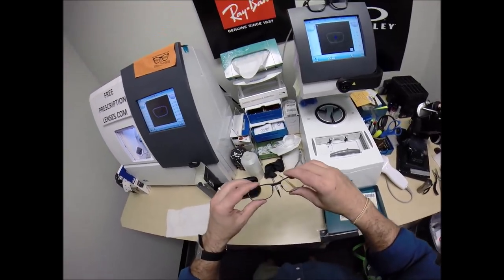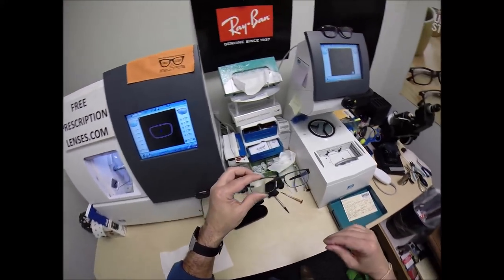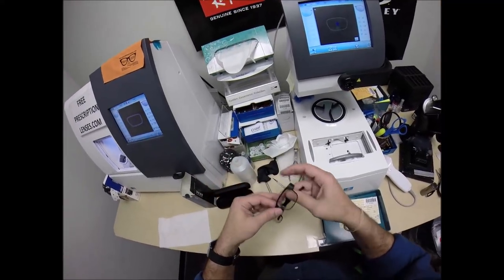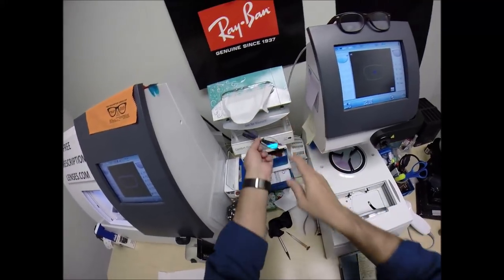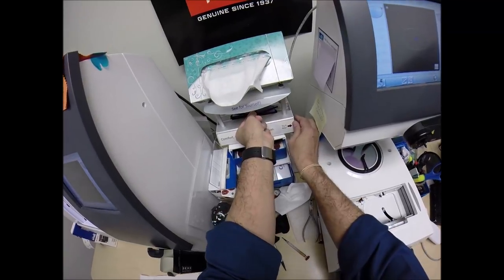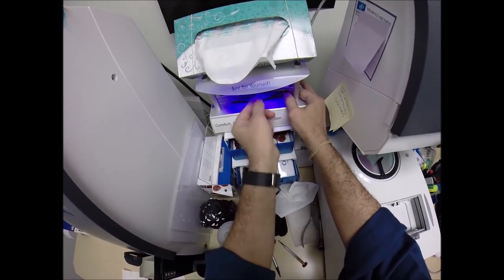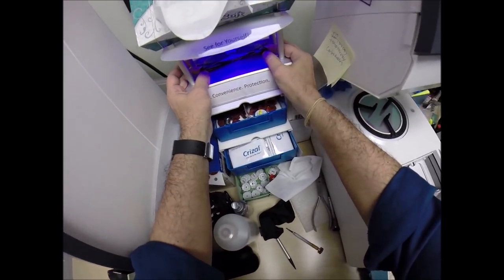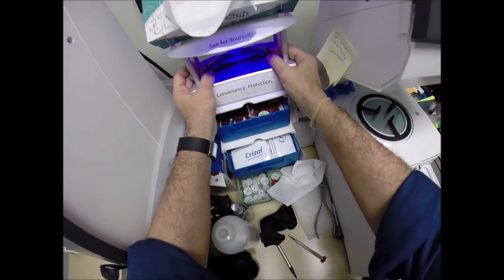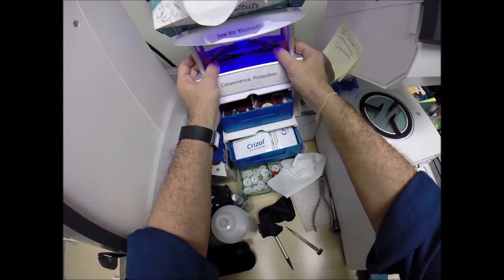So again, this is what your lenses look like clear. I'm going to go ahead and expose them to a strong burst of ultraviolet light in my little transitions box. As you can see, it takes about 30 to 45 seconds for transition lenses to darken. It takes a little bit longer when you come back inside, 45 seconds to a minute to a minute 15.